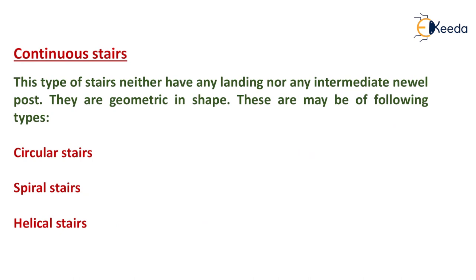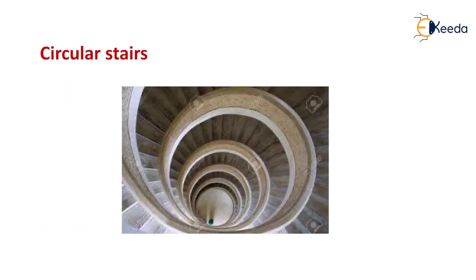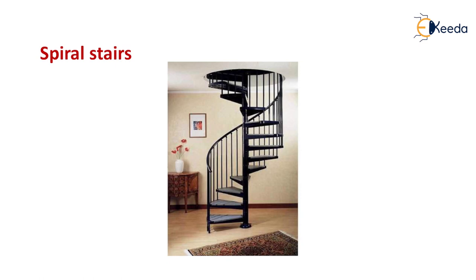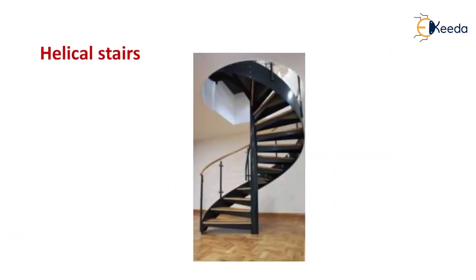Continuous stairs have neither any landing nor any intermediate newel post; they are geometric in shape. These may be of the following types: circular staircase, spiral staircase, and helical staircase. Now we will see their diagrams — circular staircases are like this, spiral staircases are like this, and helical staircases are like this. In the next class we will study design of staircase.